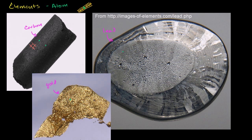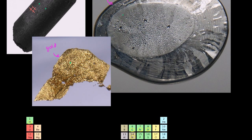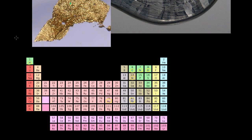They're actually defined by the arrangement of those fundamental particles. And if you were to change the number of fundamental particles you have, you could change the properties of that element — how it would react — or you could even change the element itself. To understand it a little bit better, let's talk about those fundamental particles. So you have the proton. The proton is actually the defining characteristic — the number of protons in the nucleus of an atom — and I'll talk about the nucleus in a second — that is what defines the element.